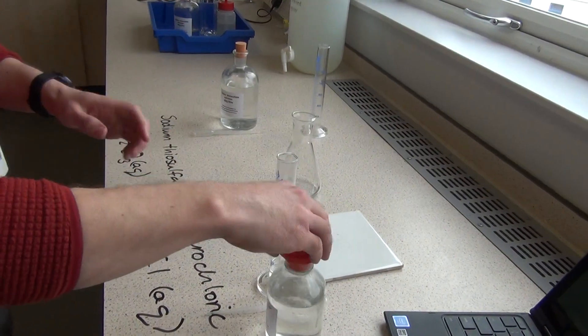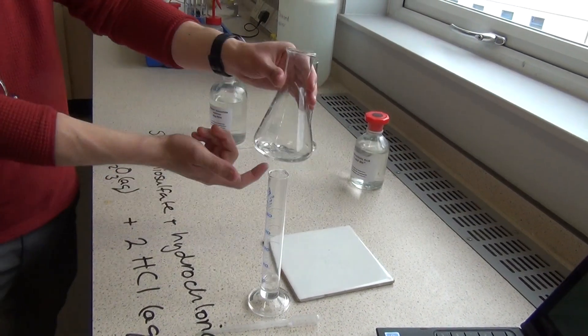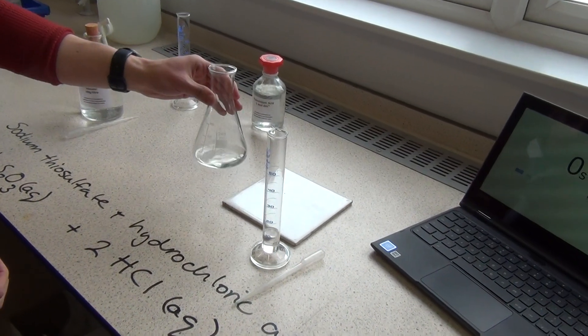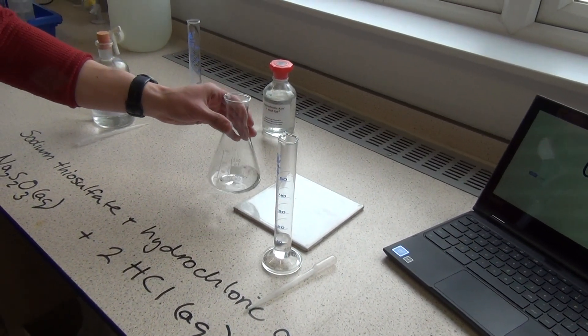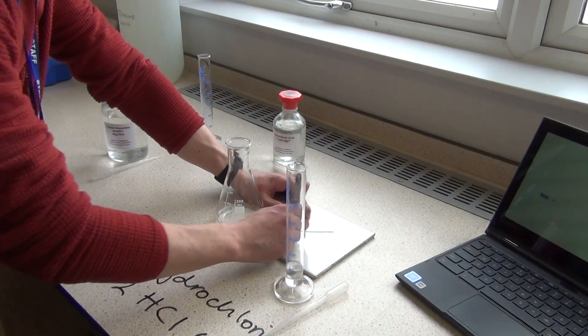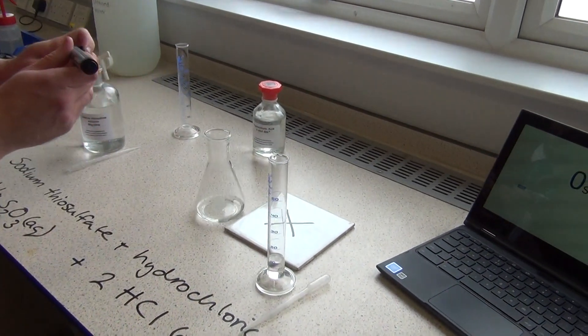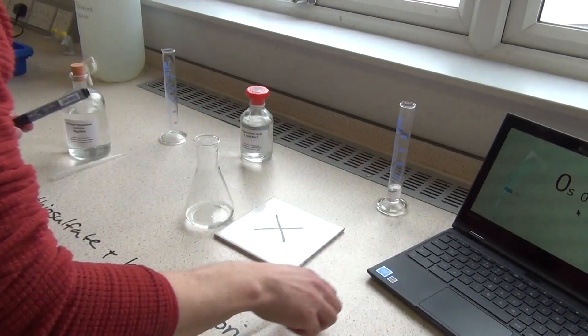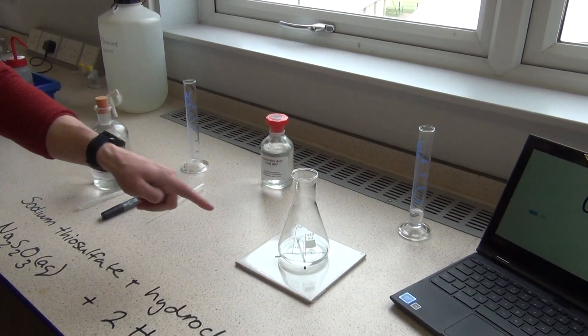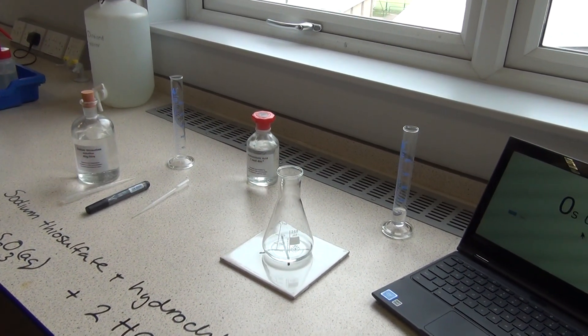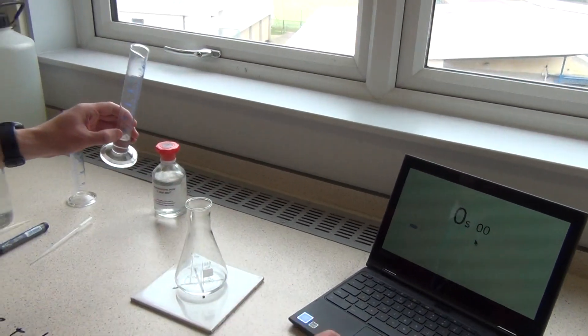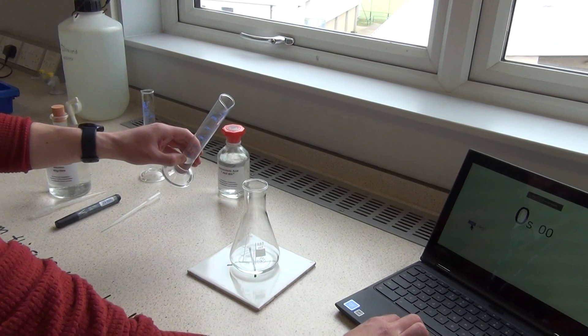Now, as soon as I add the hydrochloric acid to the sodium thiosulfate in here, it's going to start reacting, and what I need to do is time how long it takes to turn cloudy. But cloudy is a bit of a weird judgment, so what we're going to do is we're going to draw a black cross on this white tile, and what we'll do is we'll say that the reaction's finished when I can no longer see that black cross through the solution. Okay, so I'm going to add the hydrochloric acid and start my timer at the same time.